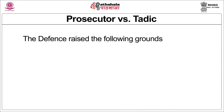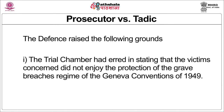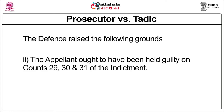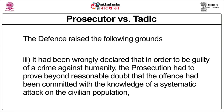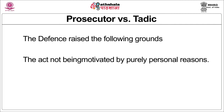The defence raised the following grounds: first, that the trial chamber had erred in stating that the victims did not enjoy the protection of the grave breaches regime of the Geneva Conventions of 1949; second, that the appellant Dusko Tadic ought to have been held guilty on counts 29, 30 and 31 of the indictment; and third, that it had been wrongfully declared that in order to be guilty of a crime against humanity, the prosecution had to prove beyond reasonable doubt that the offence was committed with knowledge of a systematic attack on the civilian population, the act not being motivated by purely personal reasons.